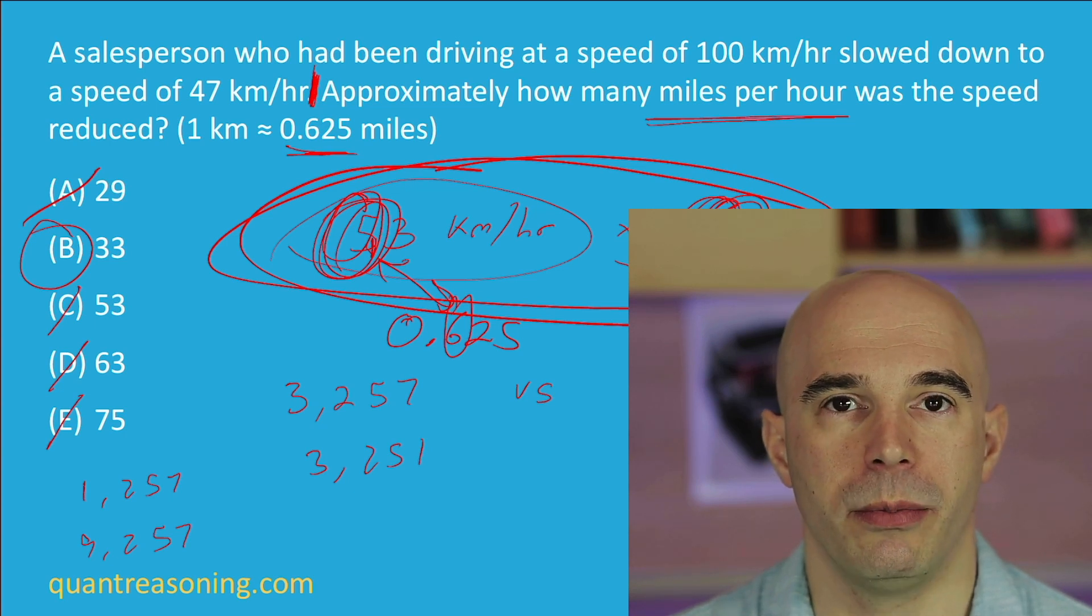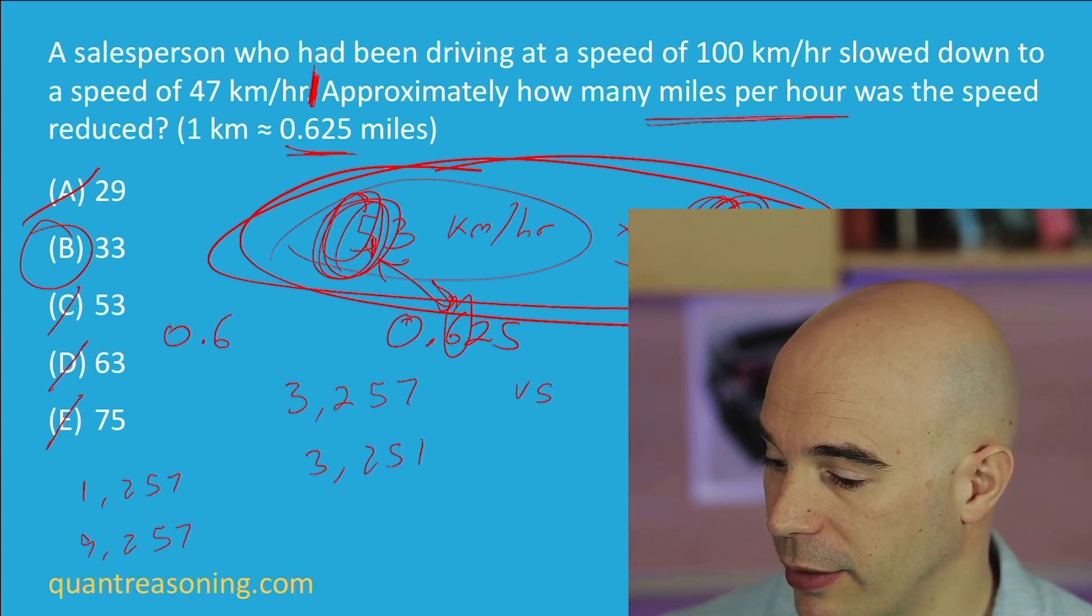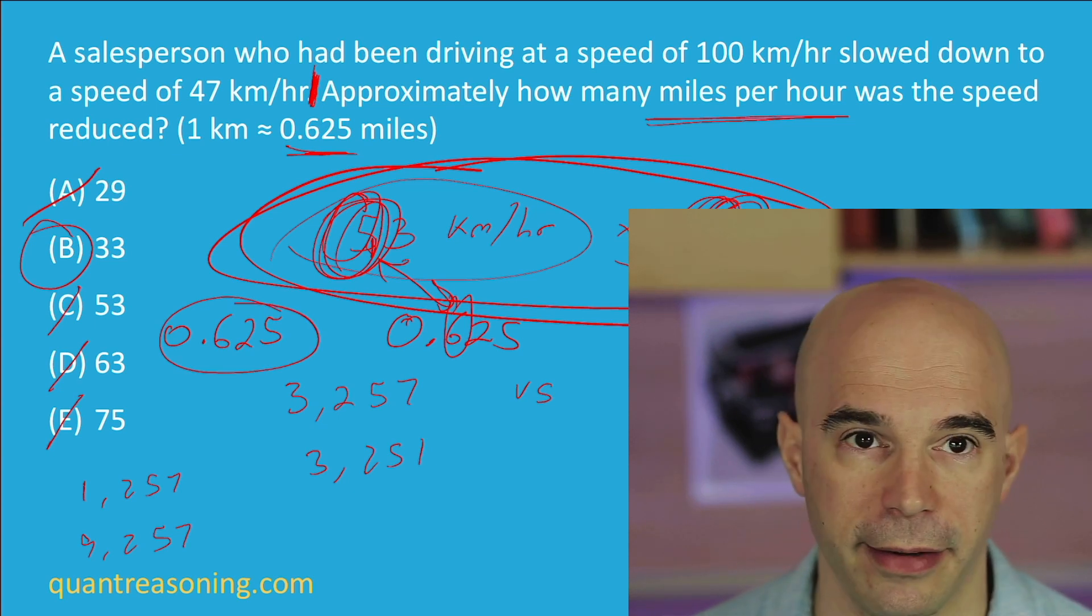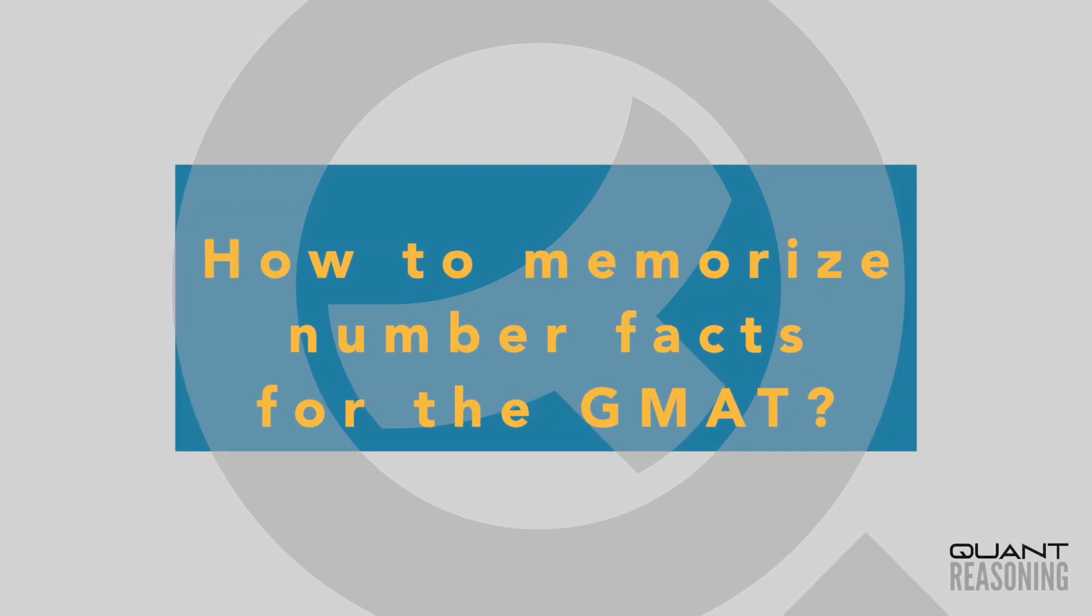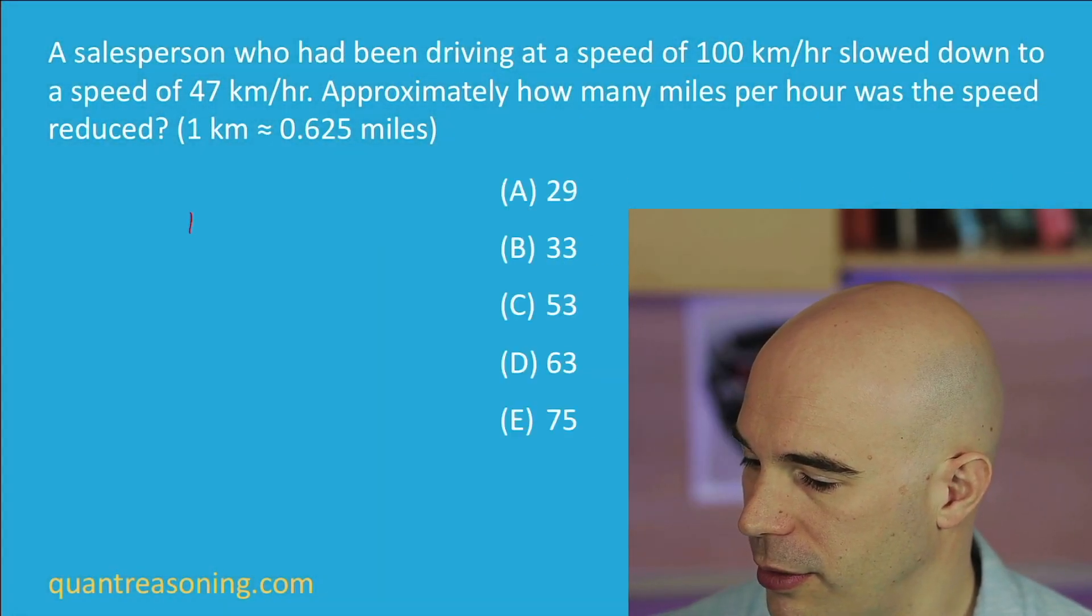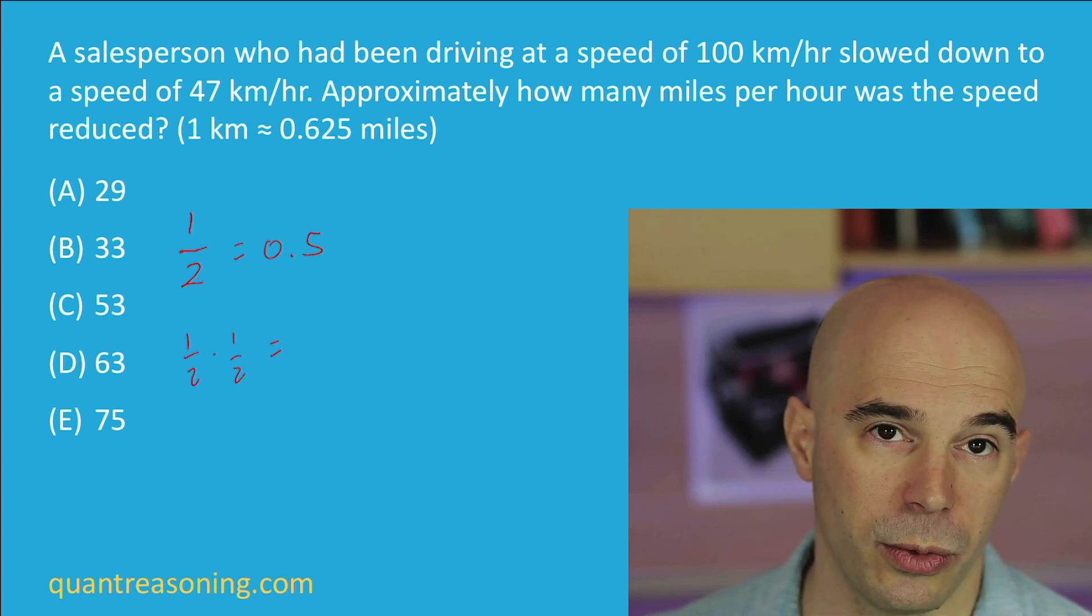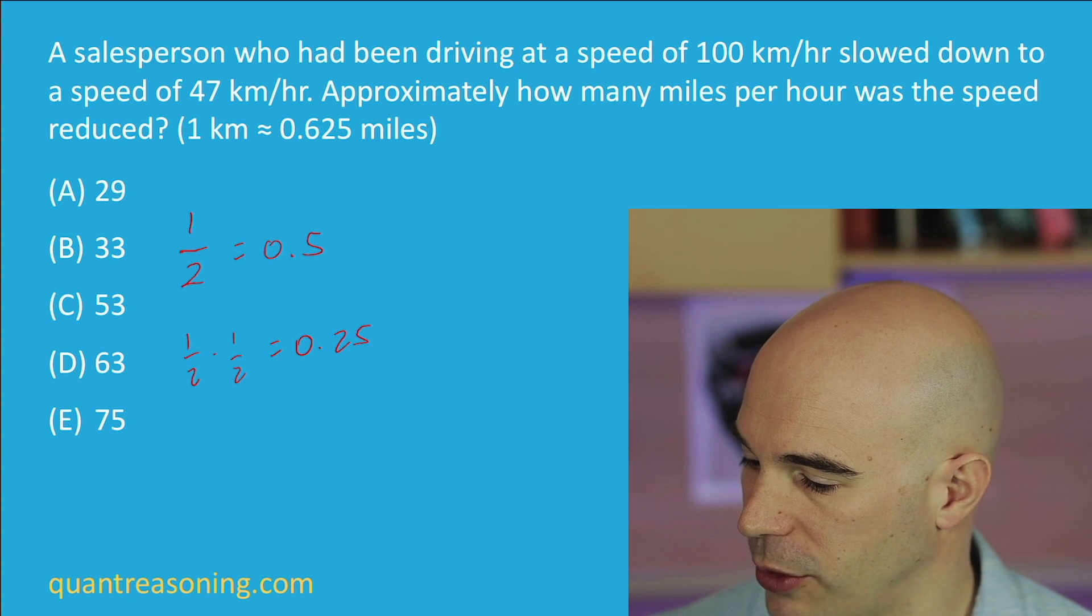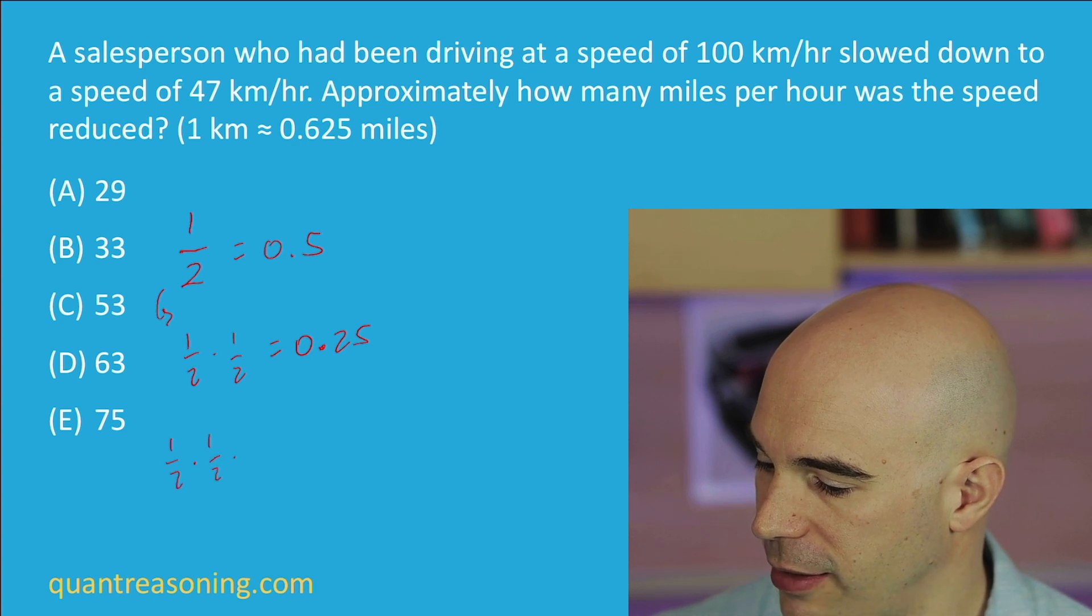Now, the way that probably most test prep companies would teach this is they would say, look, you have to memorize, and I don't disagree with them, by the way. They'll say, you have to memorize that 0.625 is what fraction. Does anybody know? If you happen to know, and I think most people do know, that half is 0.5, then half of that, also known as a quarter, would be 0.25. So you don't really need to memorize that 0.25 is a quarter, you just have to think about the logic. And if you multiply by half again, what's half of 0.25? 0.125.